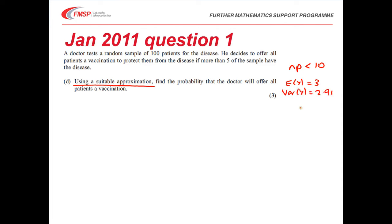Because expectation and variance are nearly the same and NP is less than 10, then the binomial to the Poisson would be the most appropriate. We can actually approximate this to a Poisson 3. What we're trying to do is the probability of Y being greater than 5.